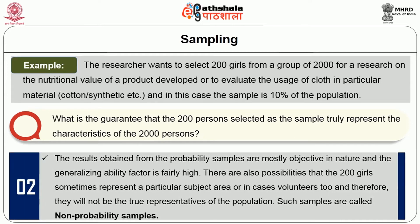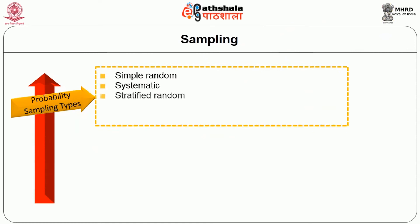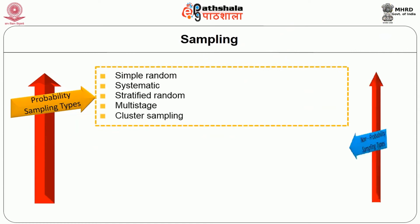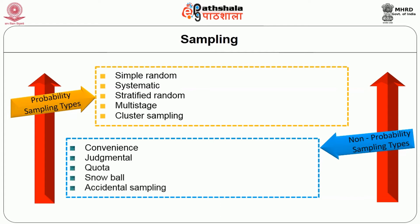Results obtained from probability samples are mostly objective in nature and the generalizing ability is fairly high. There are also possibilities that 200 girls sometimes represent a particular subject area or are volunteers, and therefore will not be the true representative of the population — such samples are called non-probability samples. Their results are sometimes subjective and cannot be generalized. Probability sampling is further classified as simple random, systematic, stratified random, multi-stage, and cluster sampling. Non-probability sampling types include convenience, judgmental, quota, snowball, and accidental sampling.